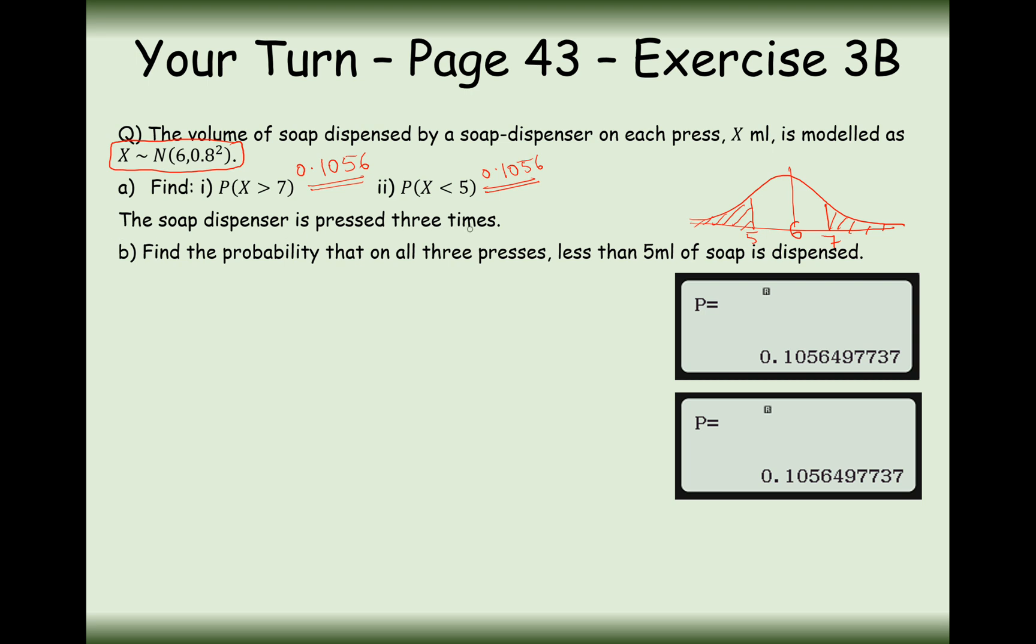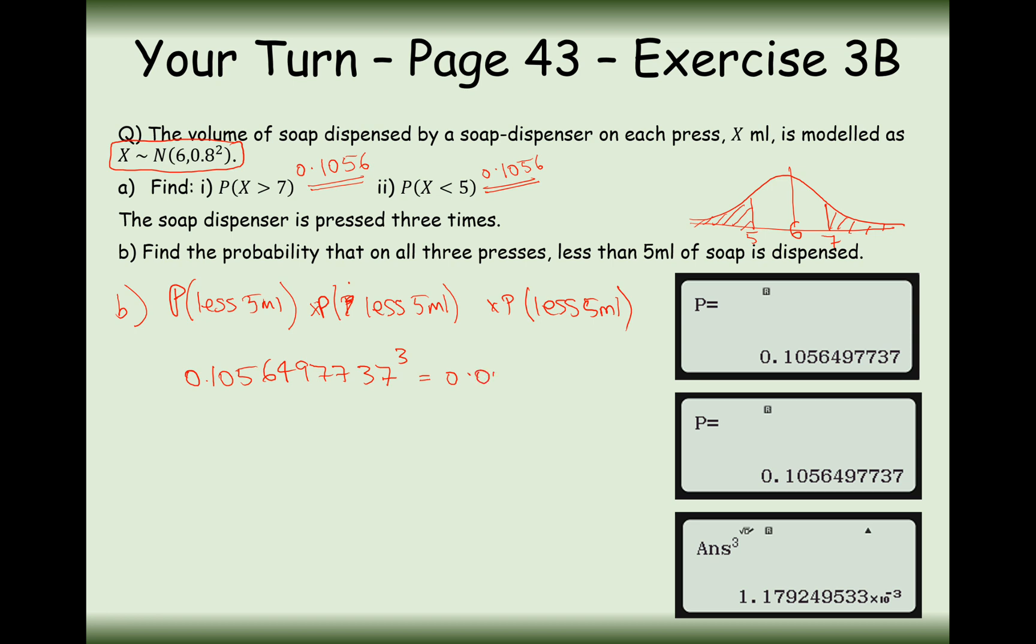Moving on to part B, the soap dispenser is pressed three times. Find the probability that on all three presses, less than 5 millilitres of soap is dispensed. We want less than 5 millilitres, and we're going to multiply this by itself three times because we want, effectively on the tree diagram, to go along the branch of less than 5 millilitres three times. So calculate 0.1056497737 to the power of 3, and we get 0.00118.